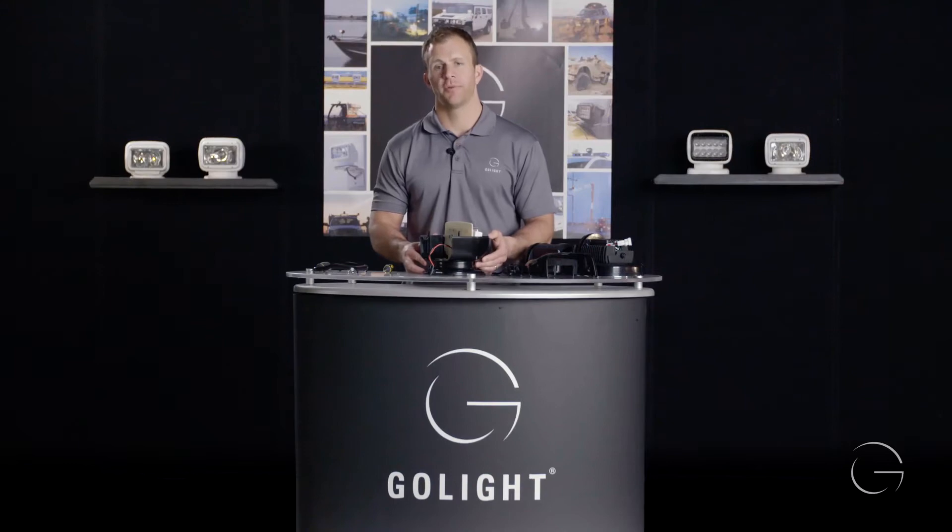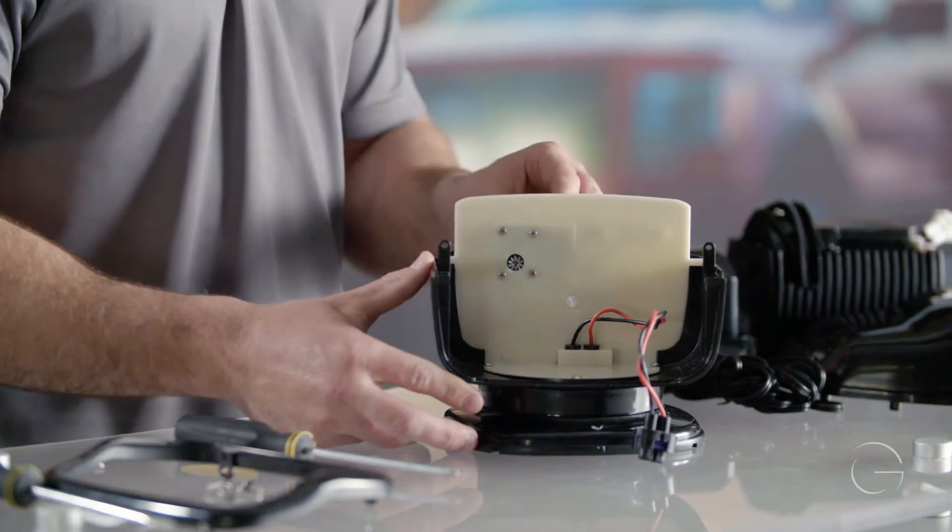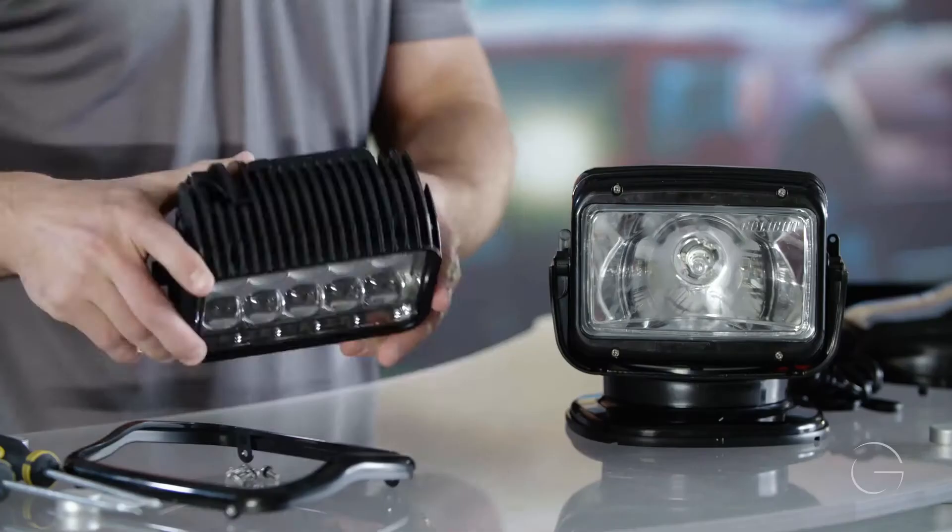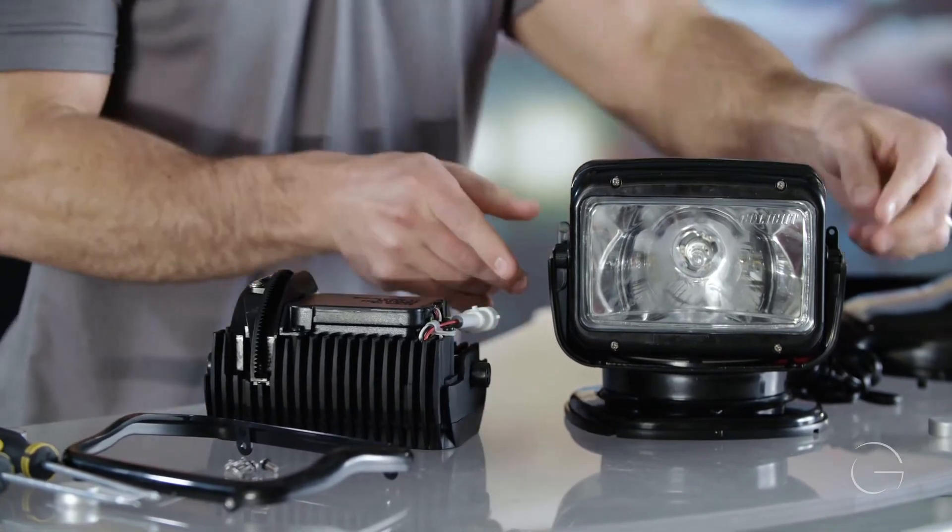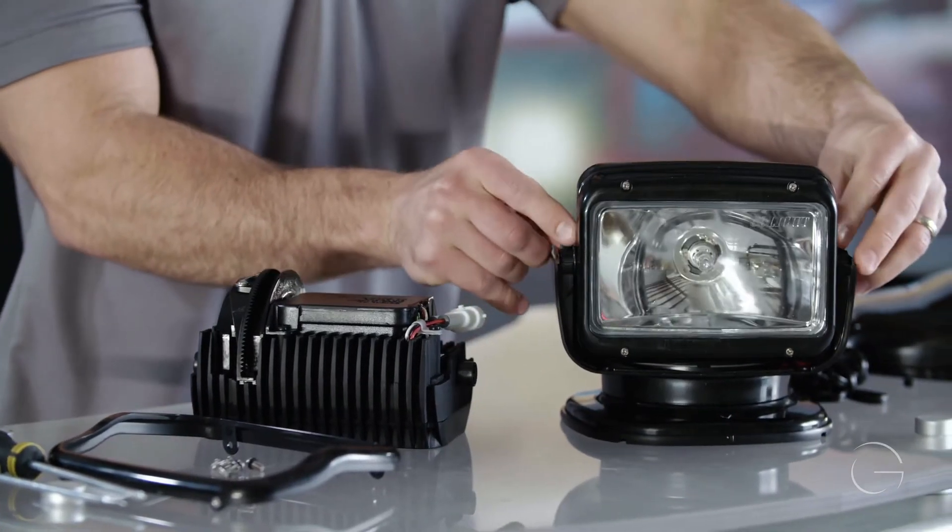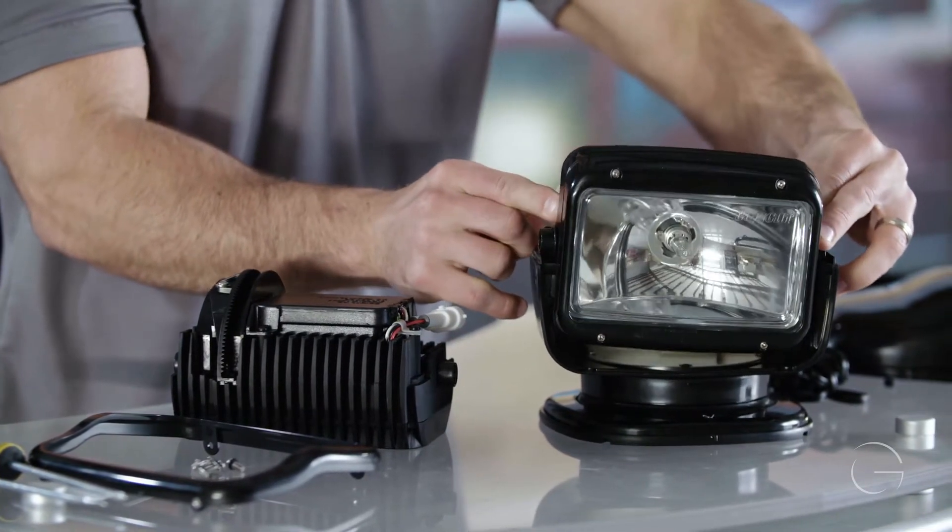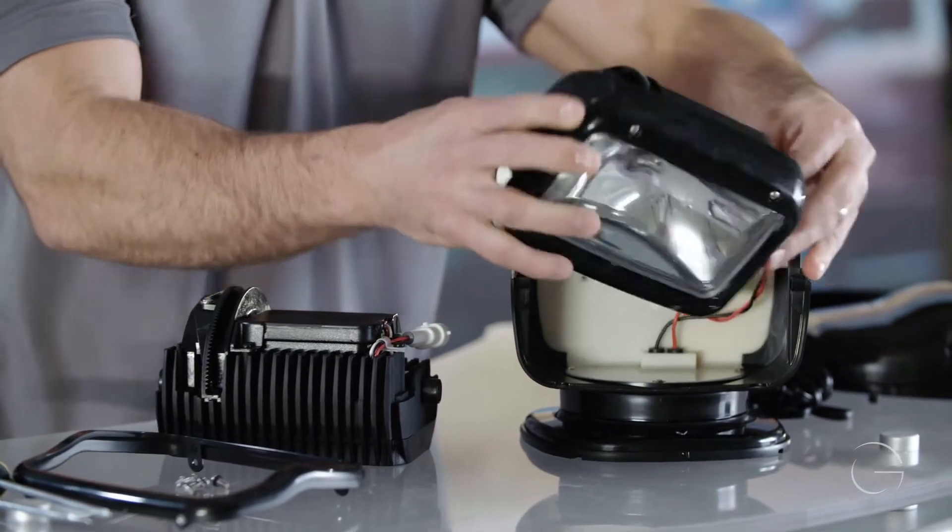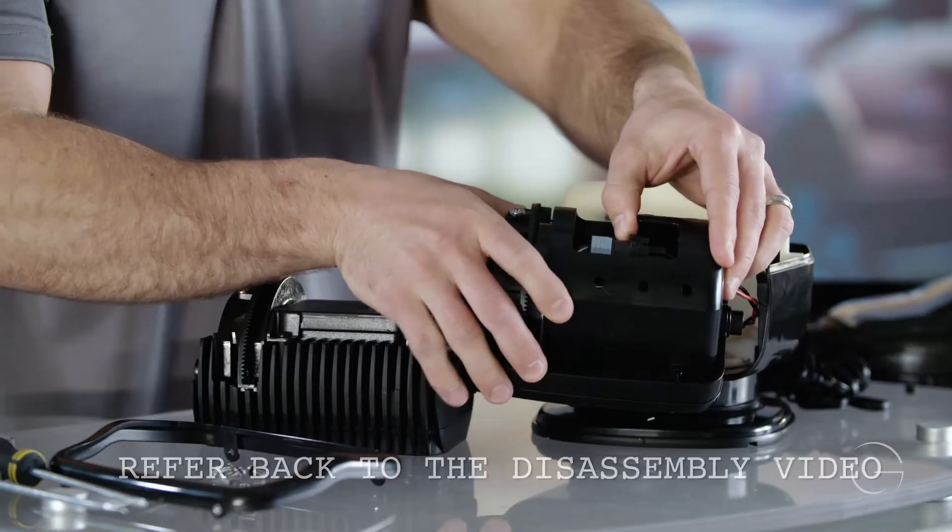In this video, we will be replacing the Go Light Radio Ray vertical motor. To do this, we will need to remove the bulb lens and reflector. Pull out with your thumbs and pop that out.